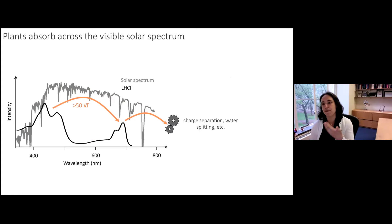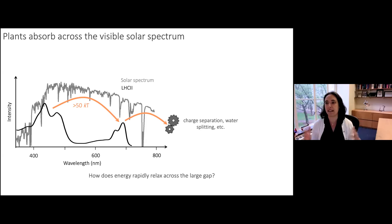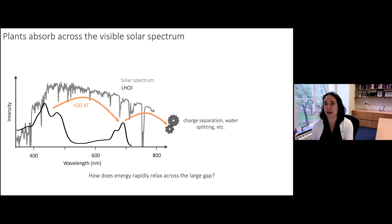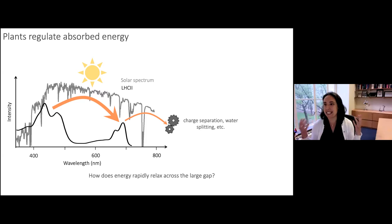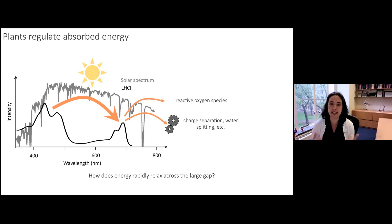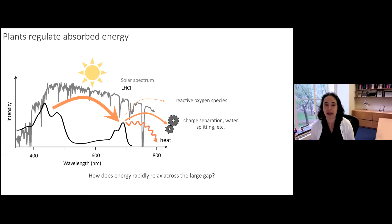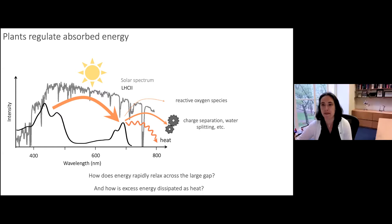So one of the things we wanted to understand is: how does that relaxation happen quickly and efficiently despite that large energy gap? The other question we'll address is that under low light conditions all the energy moves on to drive charge separation, but under high light conditions the photophysics change — chlorophylls can generate singlet oxygen and cause damage to the proteins. Instead, non-radiative decay pathways activate that convert absorbed energy into heat, and we want to understand those dissipative pathways.